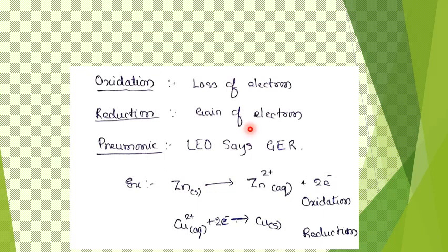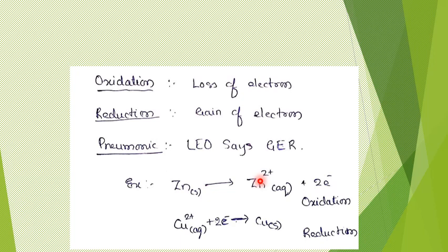First, let's see what oxidation is. Very simply, oxidation in terms of electrons is nothing but the loss of electron. Any species which is losing electrons is getting oxidized. One example: zinc solid is getting converted to zinc 2+. If this reaction takes place in water medium, then zinc 2+ ion will be surrounded by water molecules, written as zinc 2+ aqueous. So zinc is losing two electrons and we say that zinc is getting oxidized.